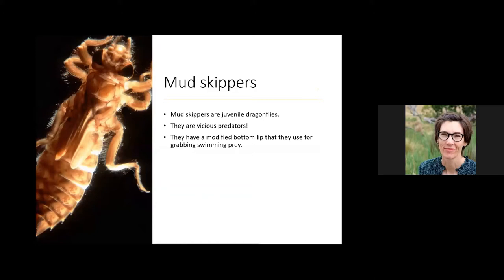The first superpower they have is a modified bottom lip used for grabbing swimming prey — it's like a pair of baseball gloves they can stretch out to grab prey swimming by, jamming it back into their mouth. The second superpower is their ability to move really fast: they can walk on their legs, but when they see something moving fast they use a little jet propulsion — squirting a little bit of water out their backsides to push themselves forward and grab the prey.